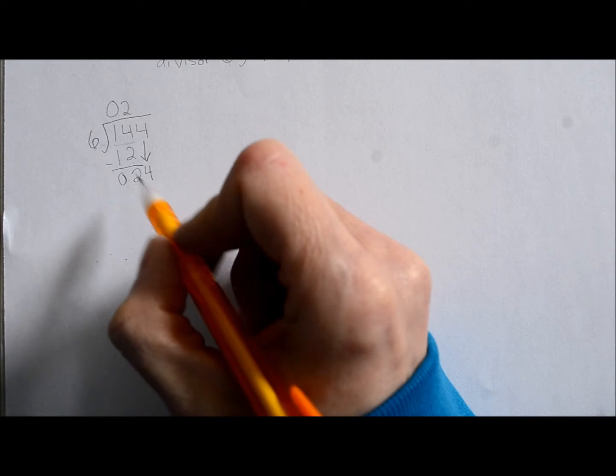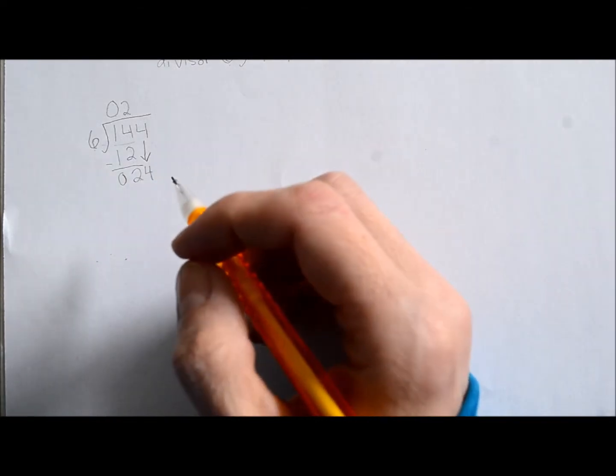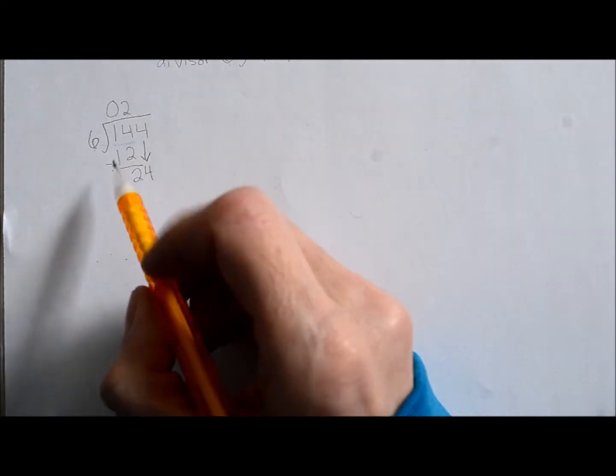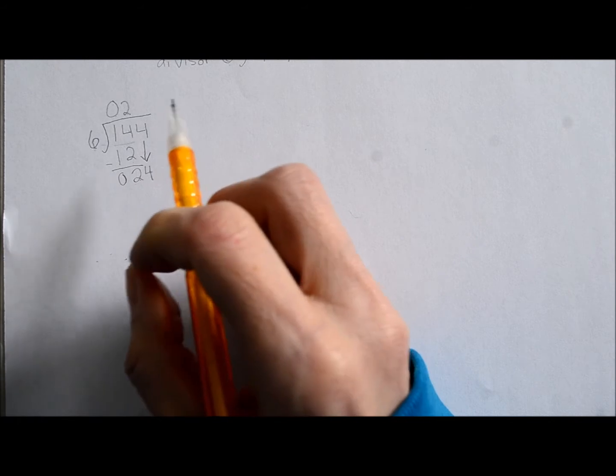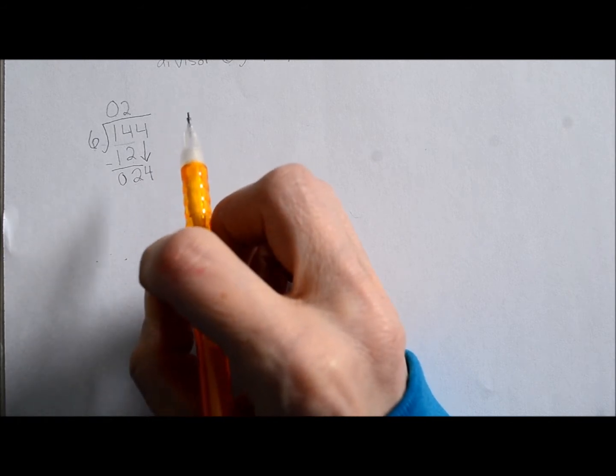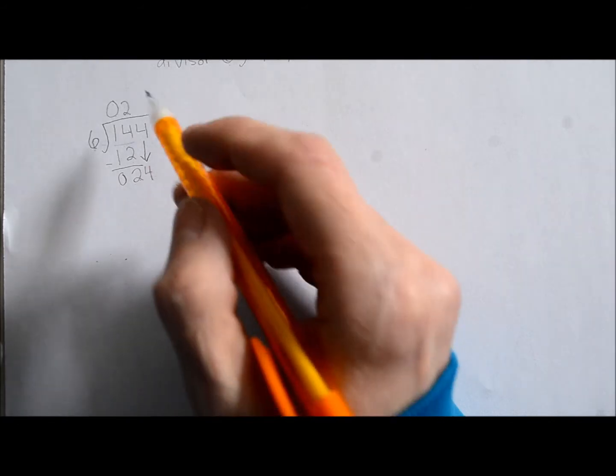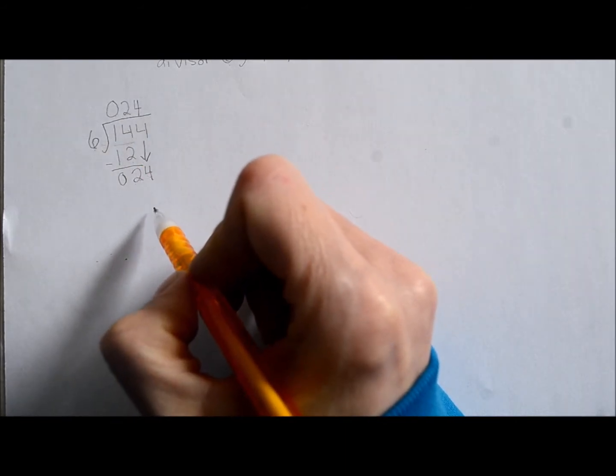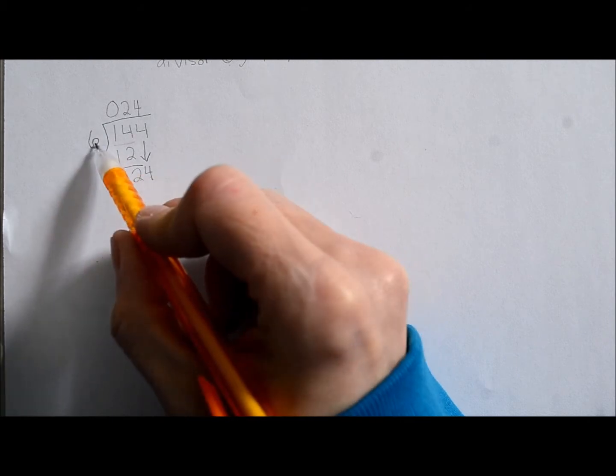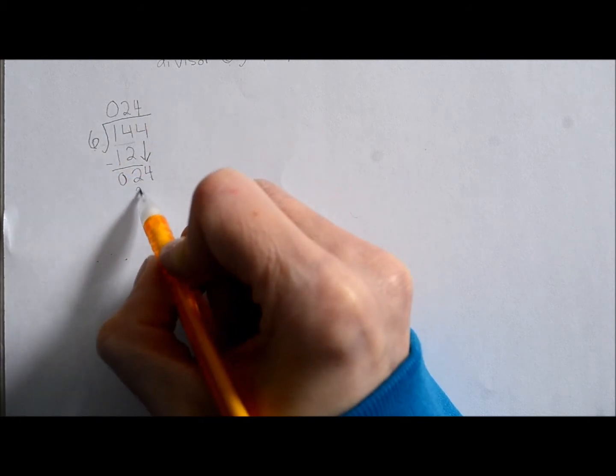Six just happens to go into 24. It's a miracle. So how many times does six go into 24? Well, it goes in four times. I know that because I've been practicing my multiplication times tables and I know you have too. All right. So six times four is 24. We have to put that down here too. What's six times four? It's 24.